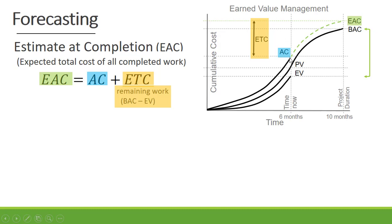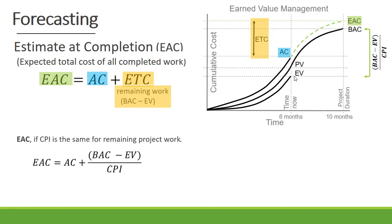So it is our actual cost at a specific point in time plus our estimate to complete — the remaining work to complete the project — which is our budget at completion minus our earned value. Now if the CPI is the same for the remaining project work, in order to forecast our estimate at completion, it is calculated as our actual cost plus budget at completion minus earned value, divided by the CPI.